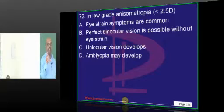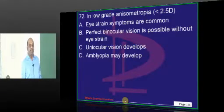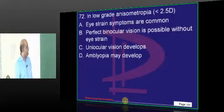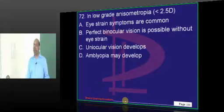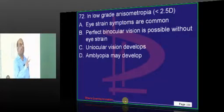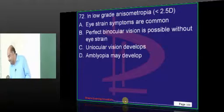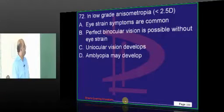There is only a fight between option C and D. What is your answer? Amblyopia may develop, but binocular vision won't be affected in the milder, lower grades of anisometropia. That is the essence of the discussion.